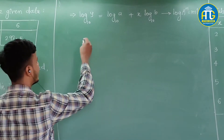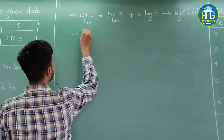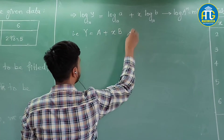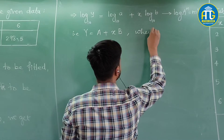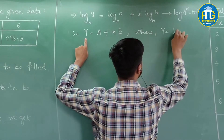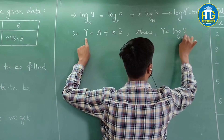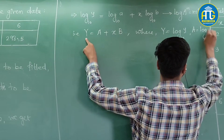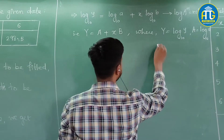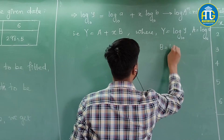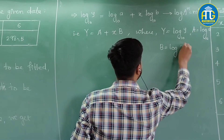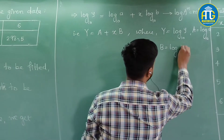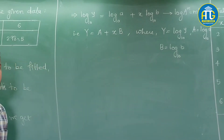Now let's write this in terms of capital letters: Y = A + Bx, where capital Y is log y to the base 10, capital A is log a to the base 10, and capital B is log b to the base 10.